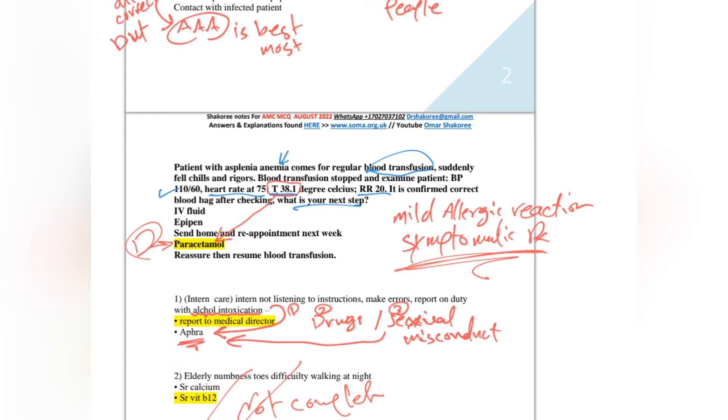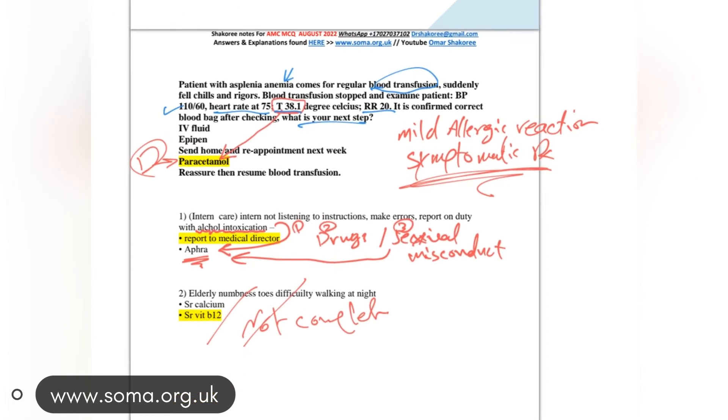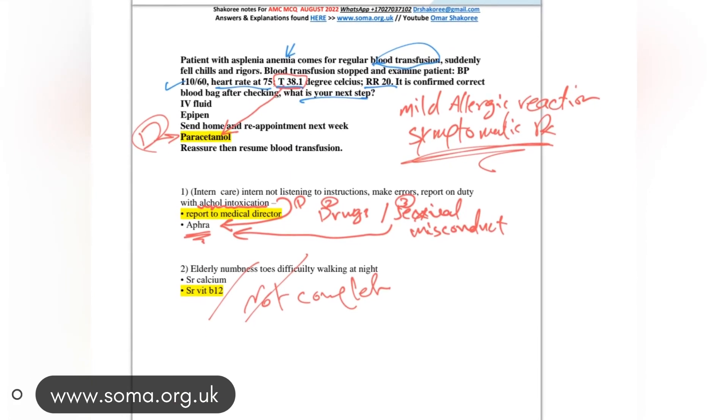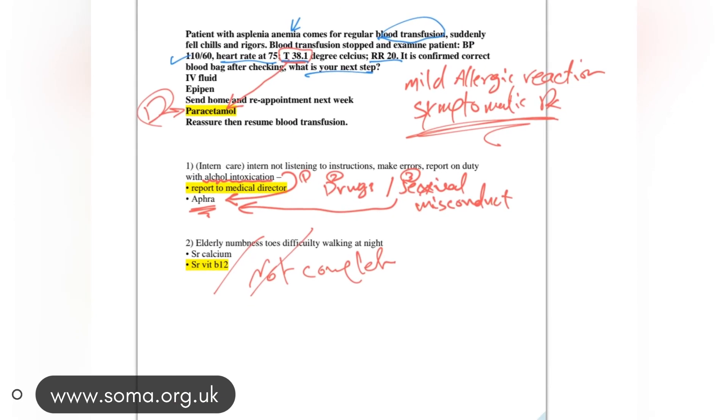If the patient got symptoms of anaphylactic shock, you have to stop blood transfusion. But if just mild allergic reaction, just fever, deal with the patient with symptomatic treatment. For fever, give paracetamol. So paracetamol is the main answer for this patient.